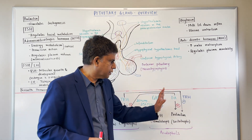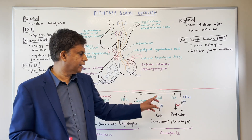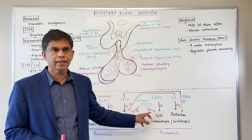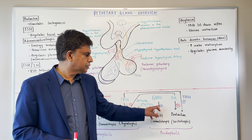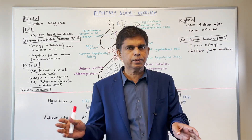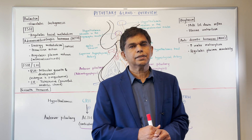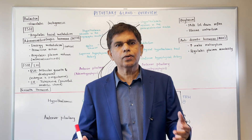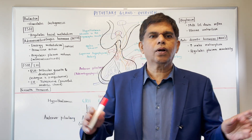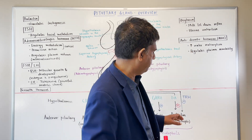The next hormone is growth hormone. What is the stimulation from the hypothalamus? Growth hormone releasing hormone stimulates the production of growth hormone. At the same time, somatostatin can inhibit growth hormone. There are pathological conditions associated with growth hormone: gigantism and acromegaly. The difference is that gigantism occurs in children during the growth phase, while acromegaly happens in adults where growth is already completed, resulting in enlarged hands and other features.